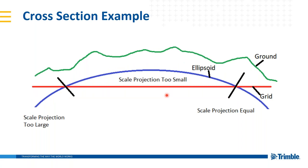Where our ellipsoid and state plane grid meet, we have what are called our standard parallels, and at that point our scale projection is equal. But we're taking a round surface and flattening it, so there's some distortion. In between our standard parallels we use a scale factor less than one — scaling from the ellipsoid down to the grid. Outside our standard parallels our scale projection is too large, so we use a scale factor greater than one to scale from the ellipsoid to the grid.